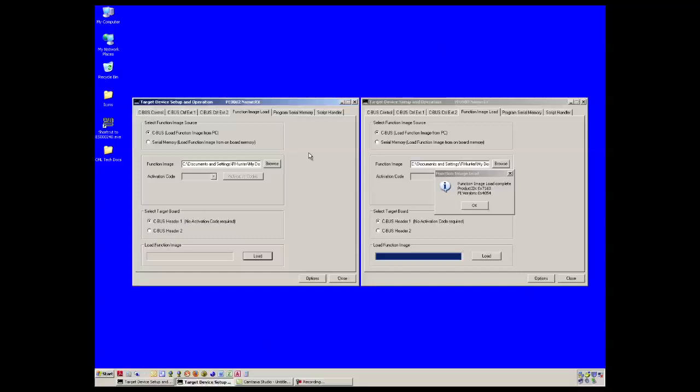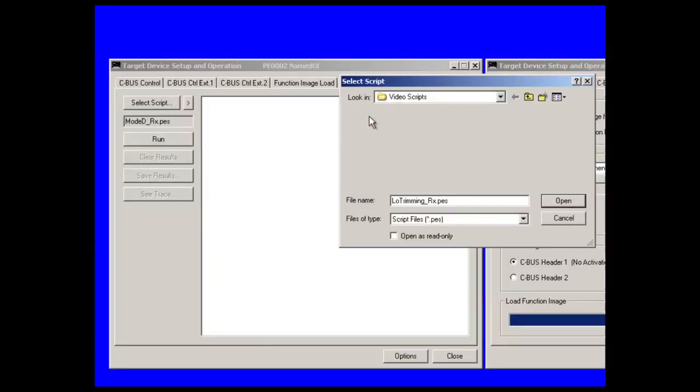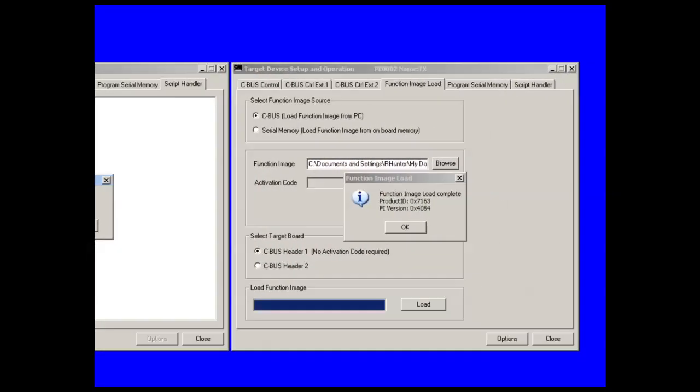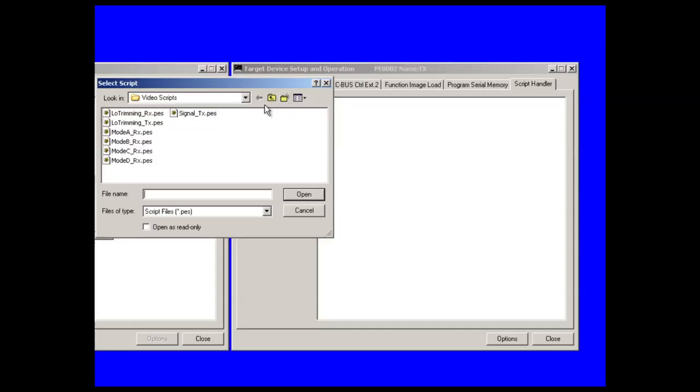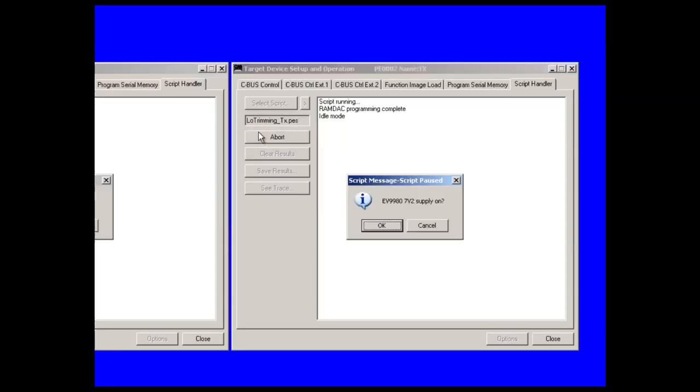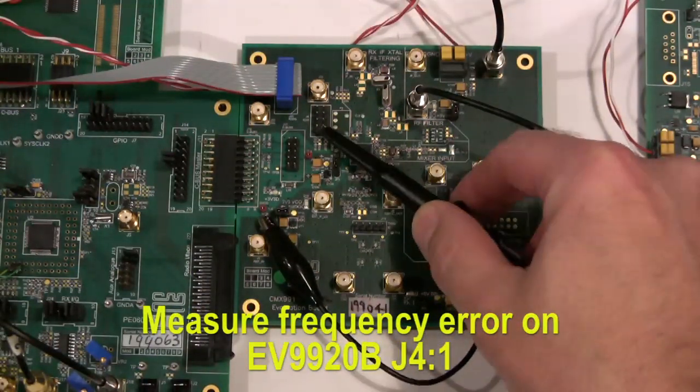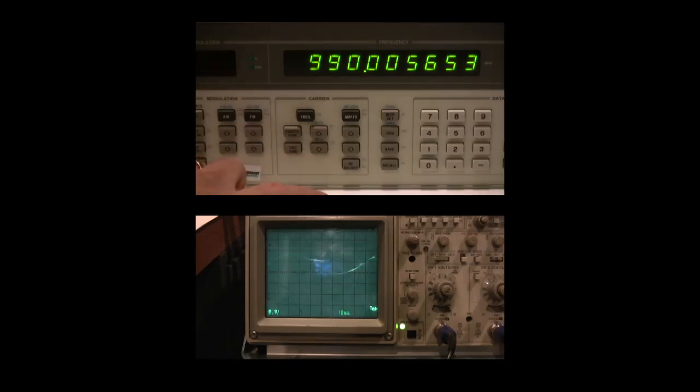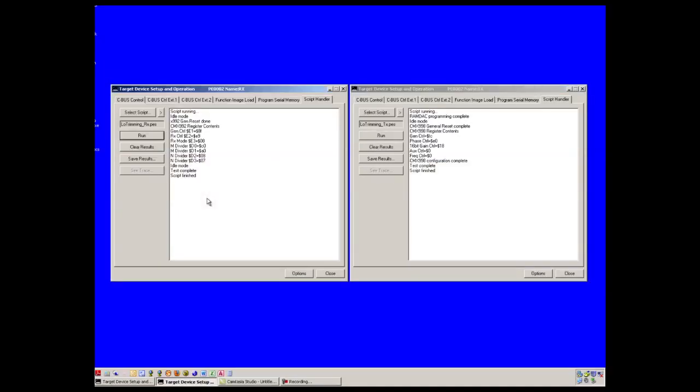Use the receive GUI to launch the receive LO trimming script and walk through the steps. When prompted, go to the transmit PE triple O2 GUI, launch the TX LO trimming script and walk through those steps. Place an oscilloscope probe on EV9920B J4 pin 1. You will probably see a sine wave on this pin. The frequency of this sine wave is the frequency error between transmit and receive. When prompted, adjust your receive RF siggen to achieve the lowest possible frequency signal. When the signal frequency is minimized, finish the LO trimming scripts.